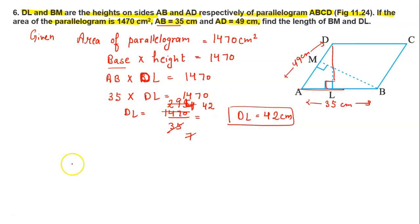Further, find BM. So here we will write base into height equals 1470. Now we have base AD with corresponding height MB equals 1470. AD is 49, MB to find.